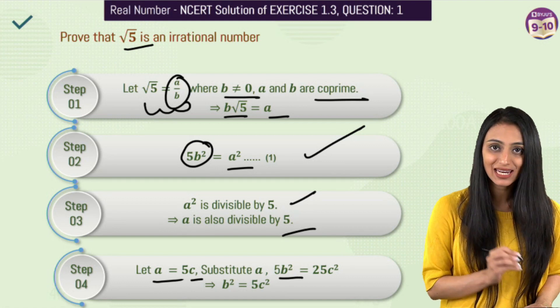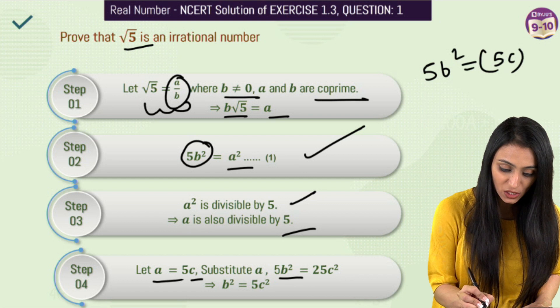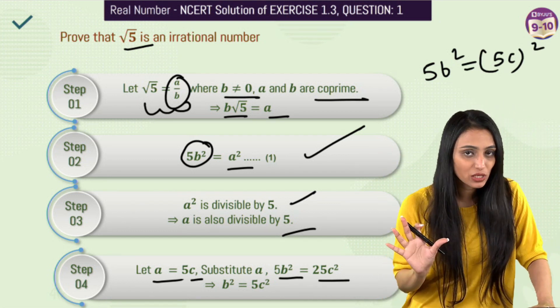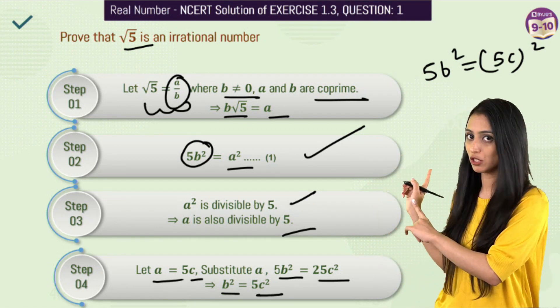We have 5b square equals to 5c square. So that's going to be 5b square equal to 5c whole square. That's going to be 5b square equal to 25c square. So this 5 and 25 will cancel out, we have b square equal to 5c square. So from here also,